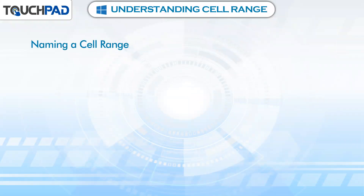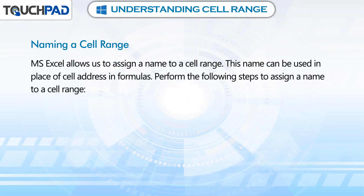Naming a Cell Range. MS Excel allows us to assign a name to a cell range. This name can be used in place of cell address in formulas. Perform the following steps to assign a name to a cell range.